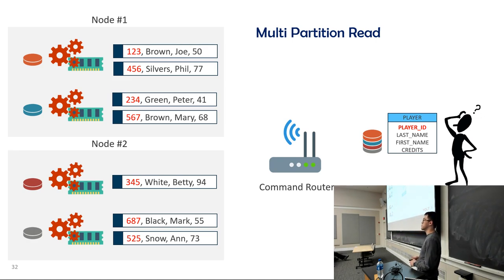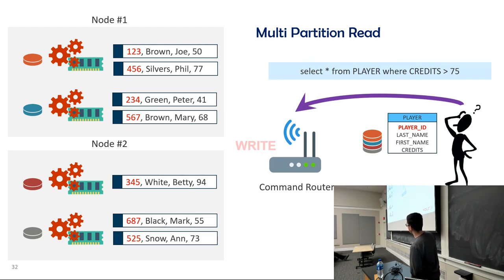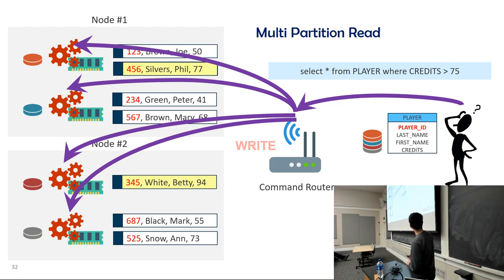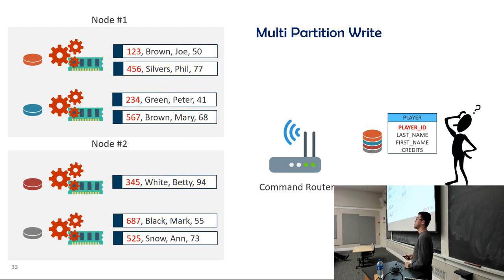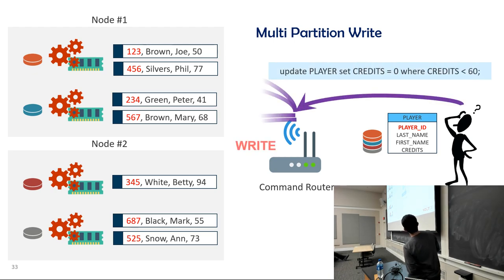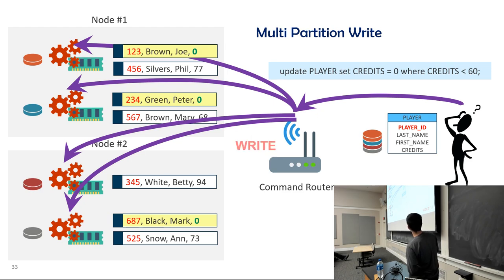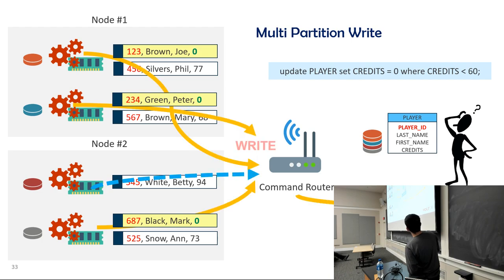Sometimes you don't have the partition column in the filter, so you don't know which single partition to execute on — that becomes a multi-partition read. You route it to every partition, each checks if it has matching rows, and replies back even with an empty message. The router combines the results and returns them to you. For multi-partition writes it's the same idea — you broadcast to all partitions and each does the write if applicable.